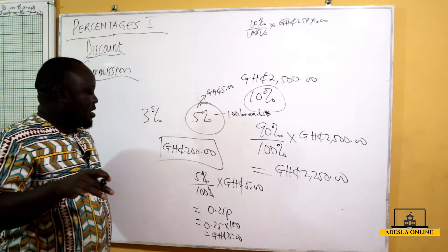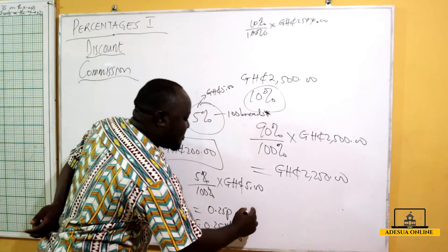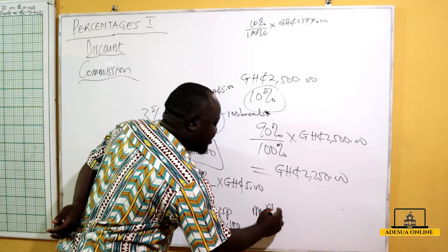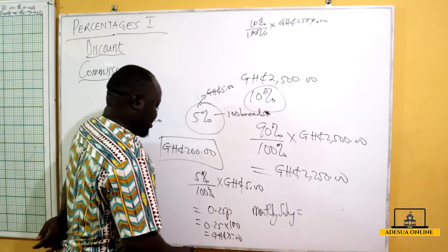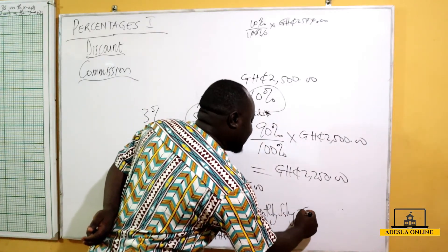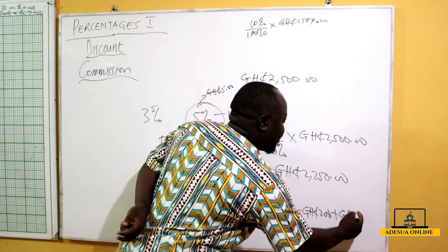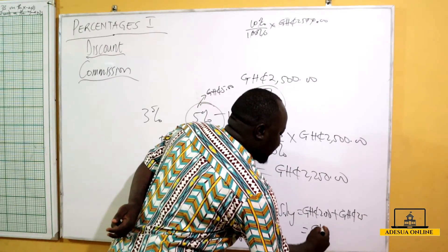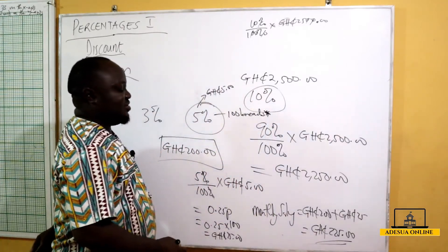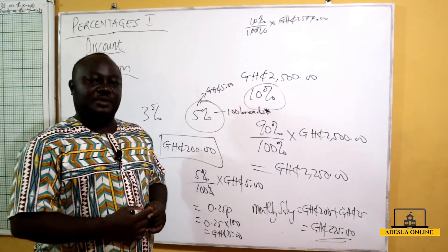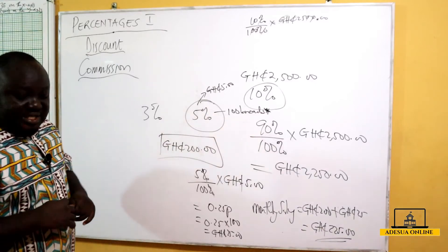So your total salary that you will be taking home is your monthly salary plus your commission. Your monthly salary is 200 Ghana cedis, plus your commission of 25 Ghana cedis, giving a total of 225 Ghana cedis to take home. So that explains commission. Now we can move on to simple interest.